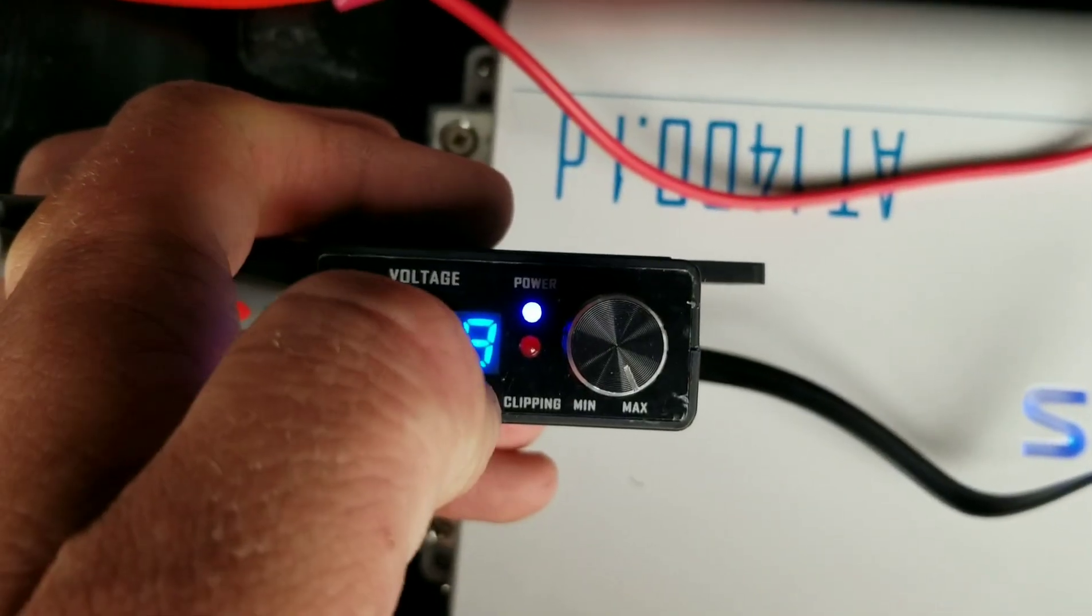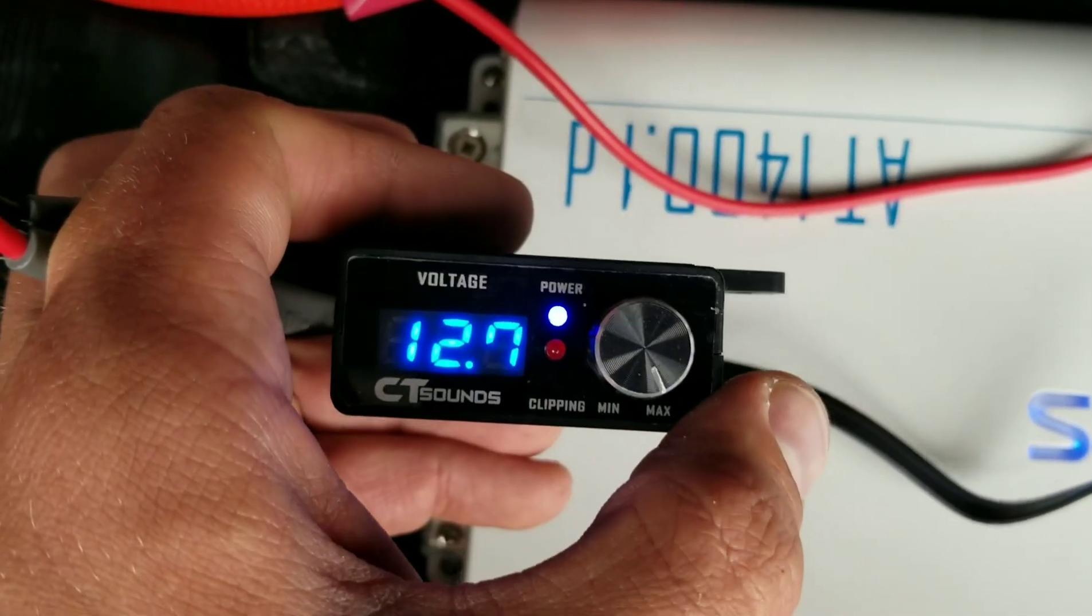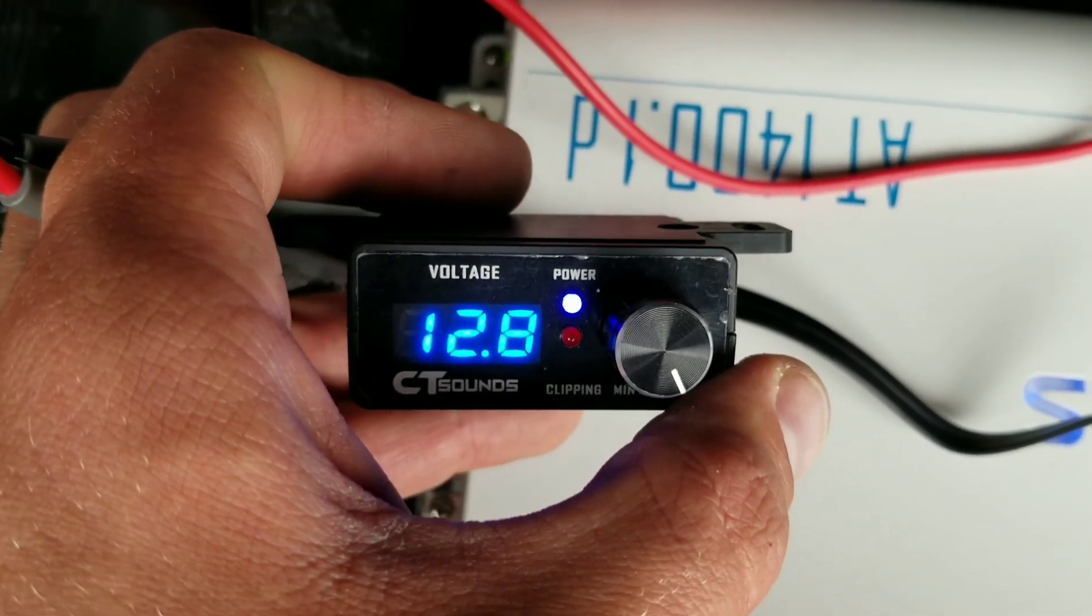Also, you can take a little piece of tint, window tint, and put it on the back side of these numbers so they're not as bright as well.